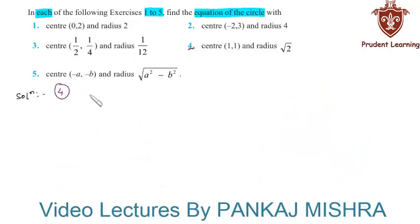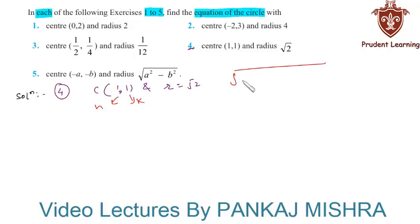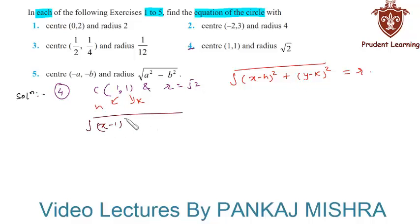In the fourth question, we are given coordinates of center are 1 comma 1 and radius of the circle is root 2. So h equal to 1 and k equal to 1. The equation of a circle with center h comma k and radius r is given by the square root of (x minus h) whole square plus (y minus k) whole square equal to r. Substituting the values, we have the square root of (x minus 1) whole square plus (y minus 1) whole square equal to root 2. Squaring both sides gives (x minus 1) whole square plus (y minus 1) whole square equal to 2.